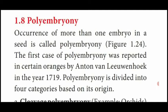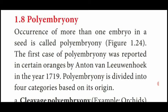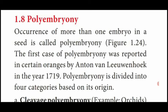Next we are going to see another important, very very important five mark question and also book back question: write short notes on polyembryony under four categories. Polyembryony - the word 'poly' means many. Inside the embryo sac, more than one embryo are formed or developed - that is said to be polyembryony. Inside the seed more than one embryo is developed - that is called polyembryony. The definition: occurrence, that means presence of more than one embryo in a seed, is called polyembryony.